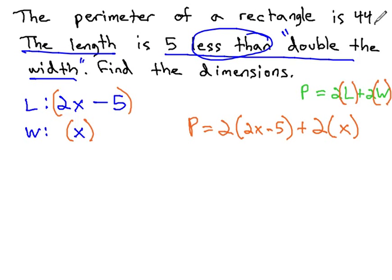The other piece of information we haven't used yet is we know the perimeter is actually 44. So, instead of writing P, let's write down that the perimeter is 44. We now have an equation we can solve in order to find the width and the length.